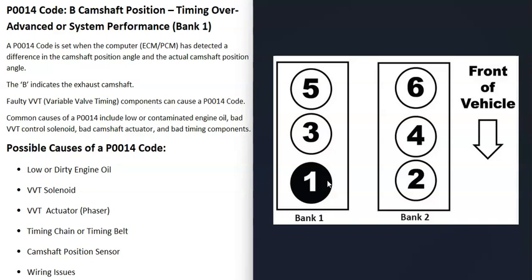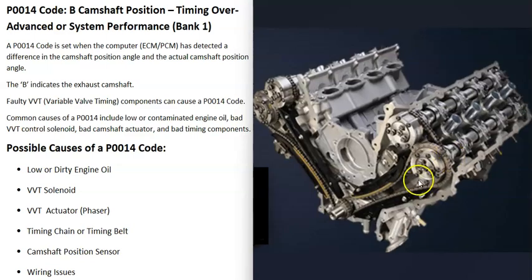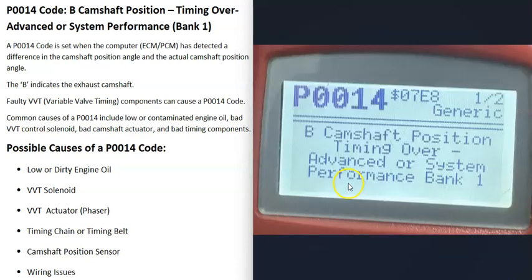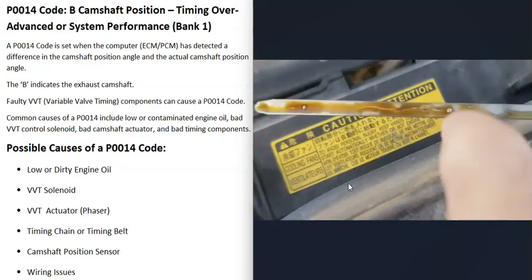You can Google your engine's firing order or cylinder location to find the number one cylinder — that side is bank one. With dual overhead cam engines, there are two camshafts on each bank: the intake cam is camshaft A and the exhaust cam is camshaft B.